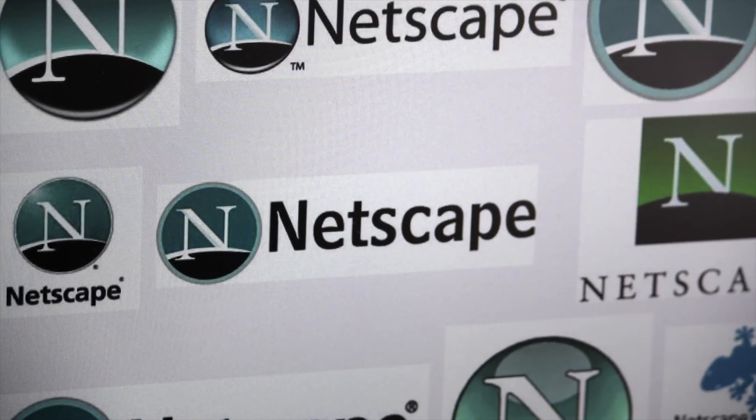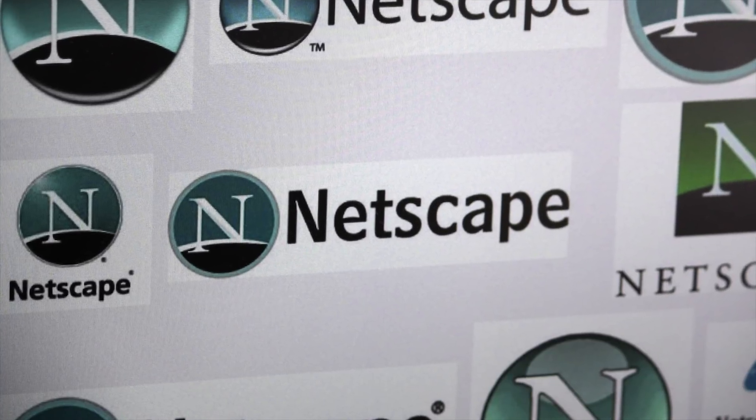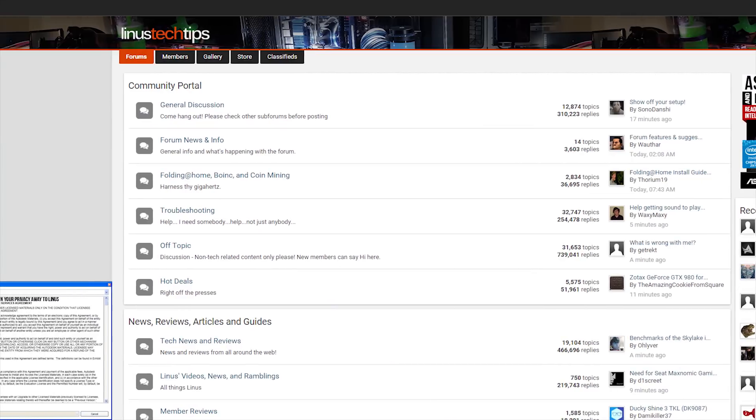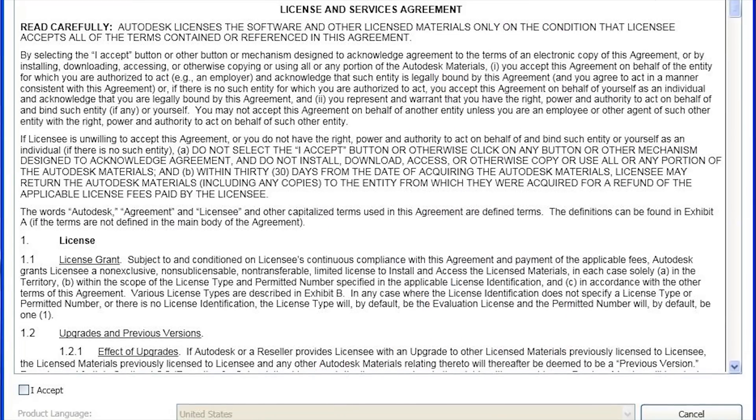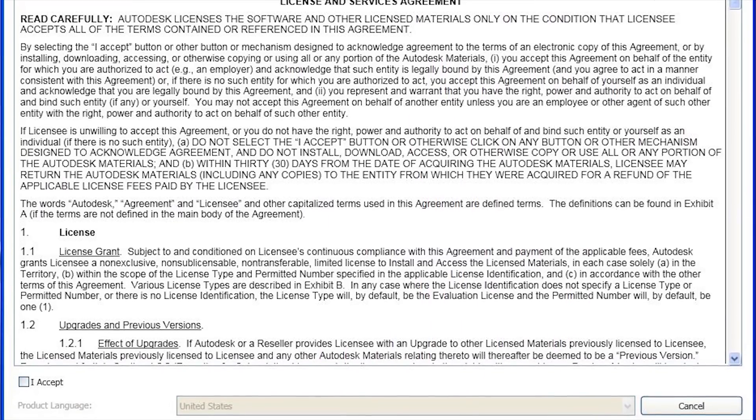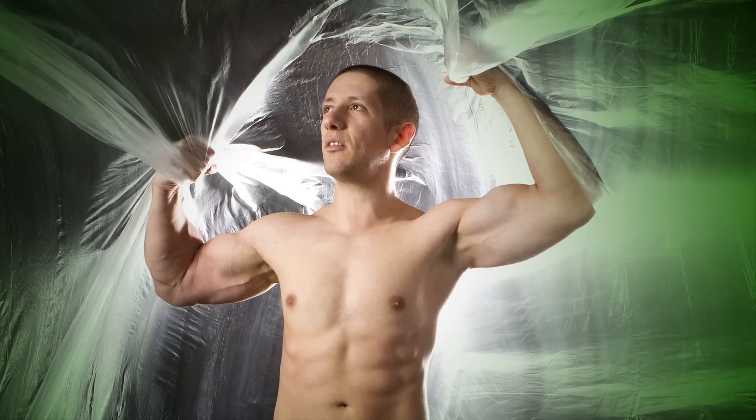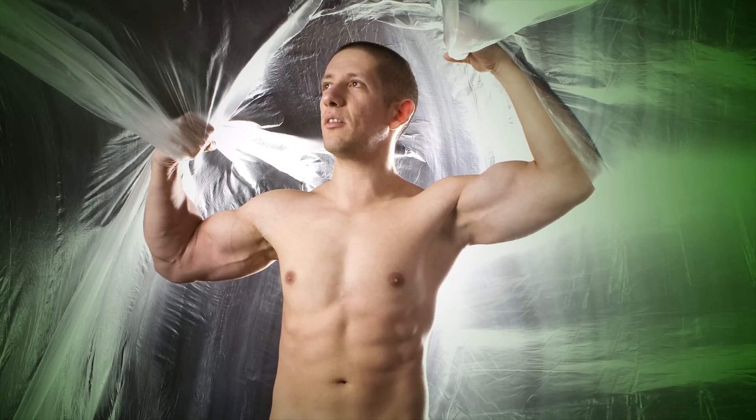For example, one American court case involving Netscape held that sticking terms of service in an inconspicuous location at the bottom of a page didn't give a user enough chance to agree. But being forced to look at a EULA before clicking next or removing the plastic wrap from a software box, if you're still into that kind of thing, with the conditions on the outside, have both been found to constitute acceptance by the user.